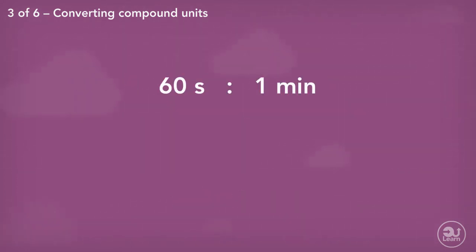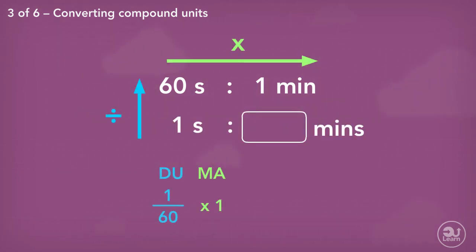Next, we move on to converting 1 second into hours. We start by using the relationship between seconds and minutes. There are 60 seconds in 1 minute. Then using the relationship between minutes and hours, which is 60 minutes to 1 hour. Divide up, multiply across. 1 divided by 60 times by 1 equals 0.016 recurring.